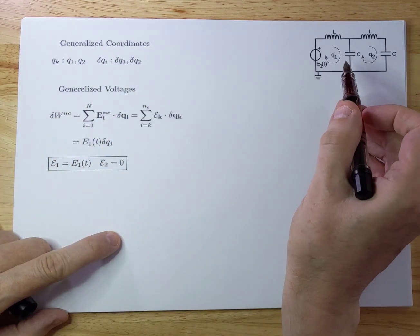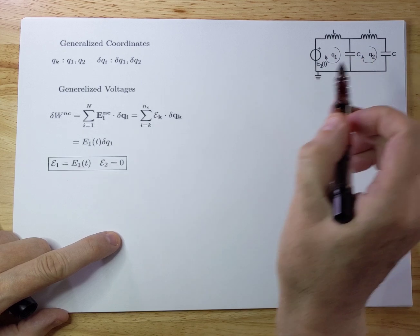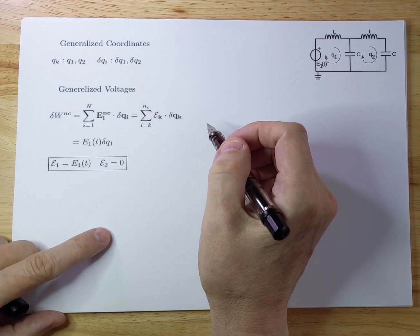Our generalized coordinates are essentially two. There's a Q1 here, and there's a Q2 here. With those two coordinates, you can essentially calculate everything you need to know.